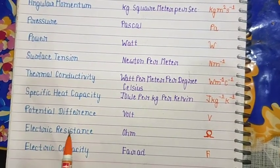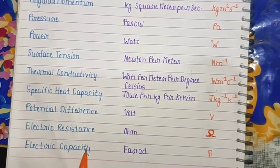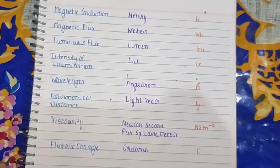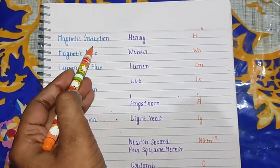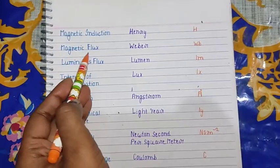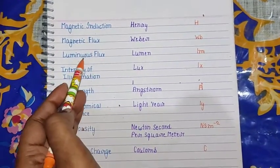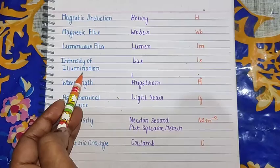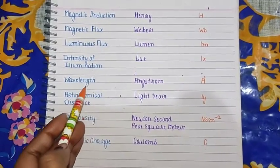Magnetic induction - Henry (H). Magnetic flux - Weber (Wb). Luminous flux - lumen (lm). Intensity of illumination - lux (lx). Wavelength - angstrom (Å).